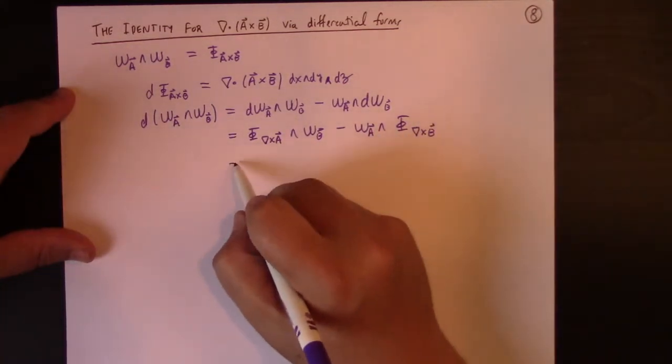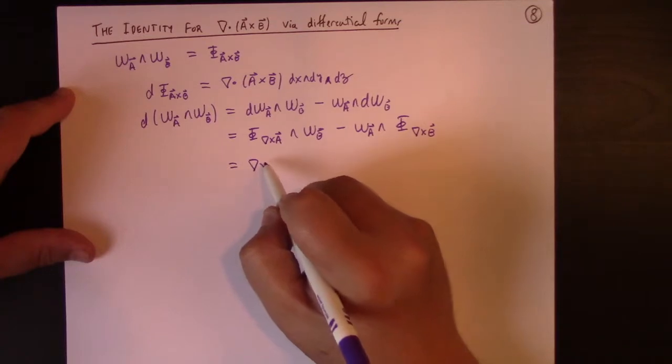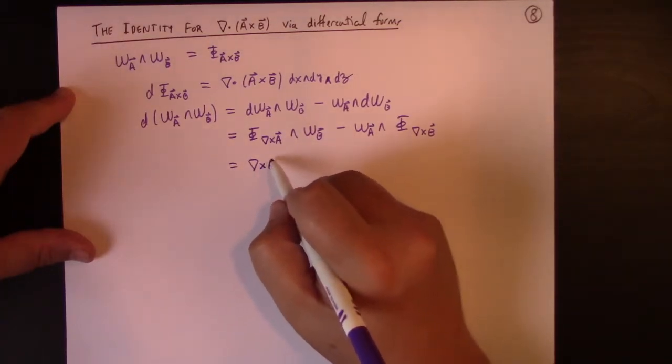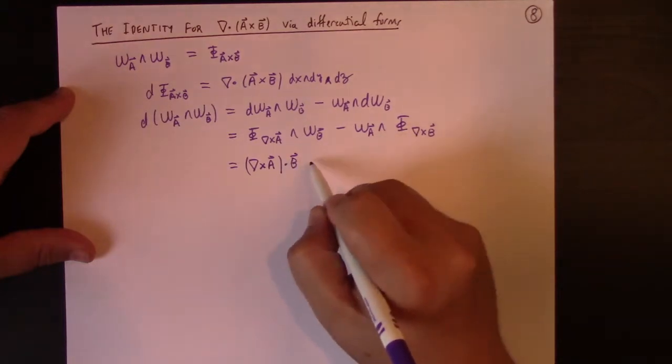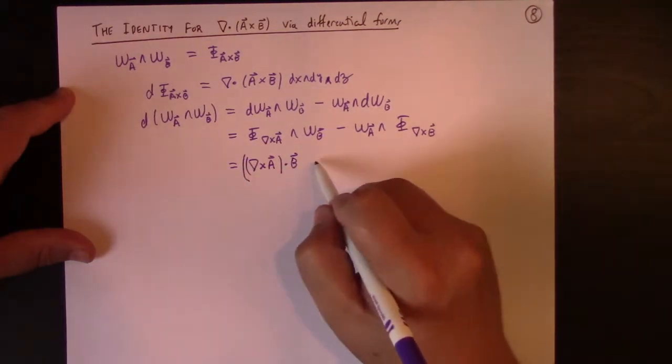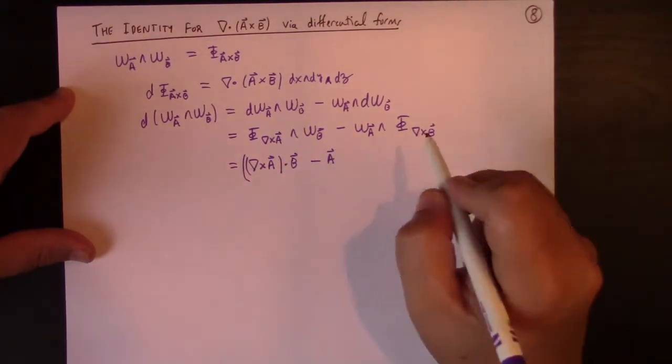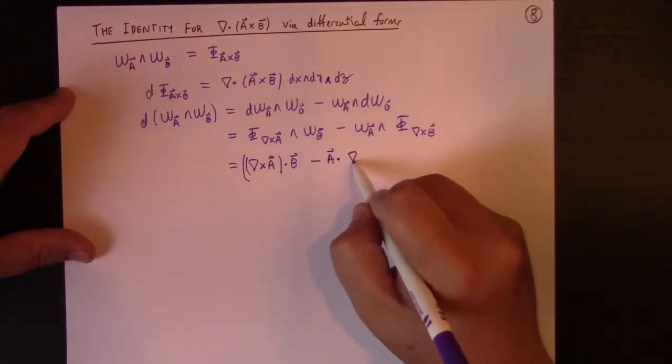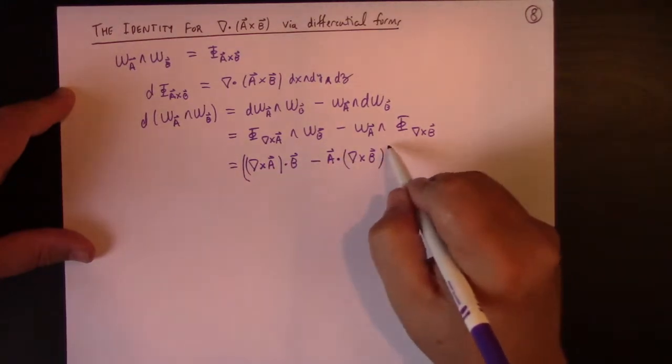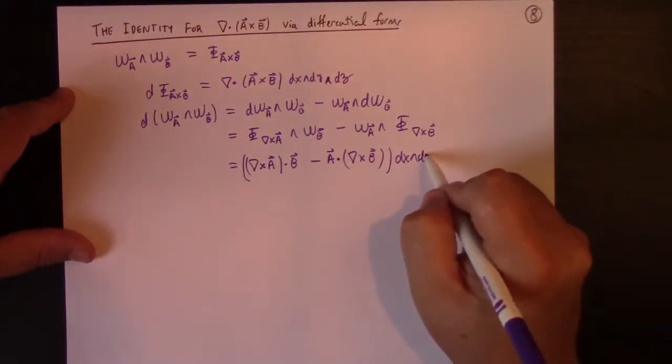Aha, but this is nothing more than—not the divergence, rather the curl of A dotted with B, and there's a top form I'm going to factor out, minus the dot product of omega A with the curl of B, dx wedge dy wedge dz.